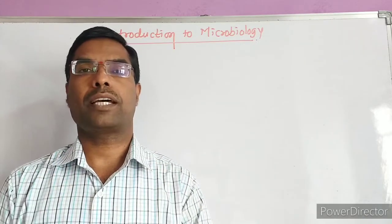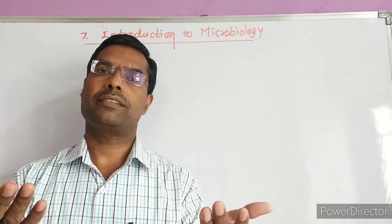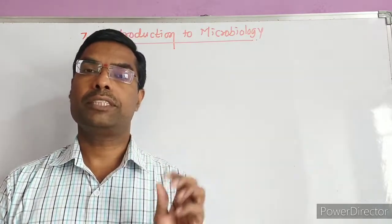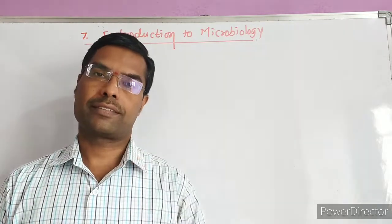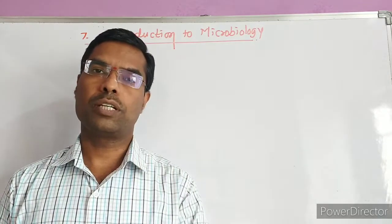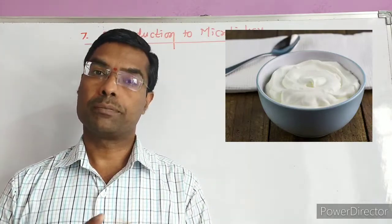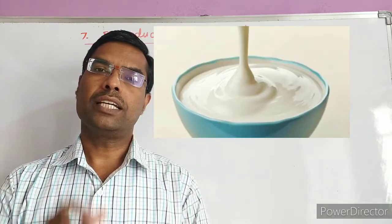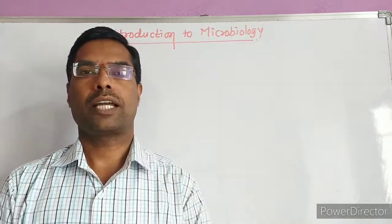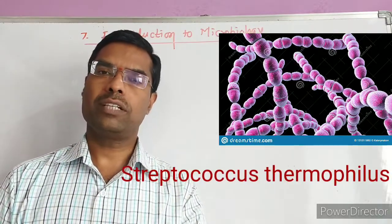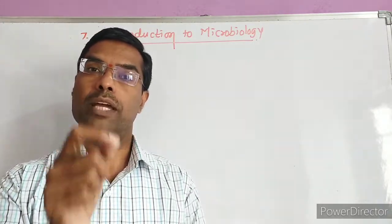Take yogurt as the first example — yogurt means dahi or curd. In industry, the milk is pasteurized: first heated, then cooled to a warmer temperature. Milk powder is also mixed in to improve the protein content. Then in a one-to-one proportion, two bacterial strains — Lactobacillus delbruckii and Streptococcus thermophilus — are added. Streptococcus converts lactose sugar into lactic acid, and the lactic acid coagulates the milk protein.